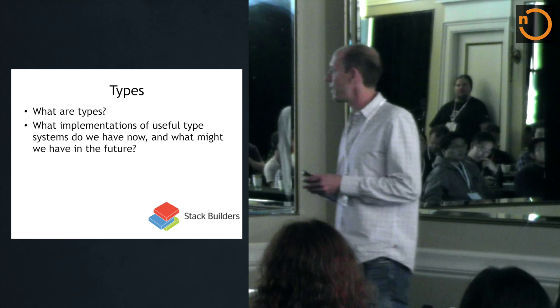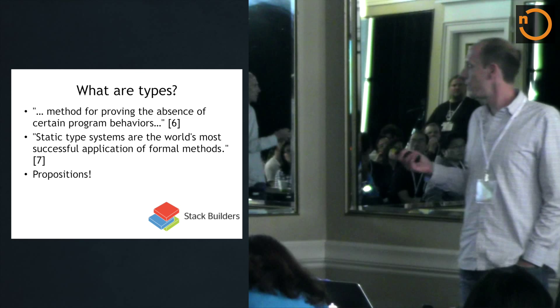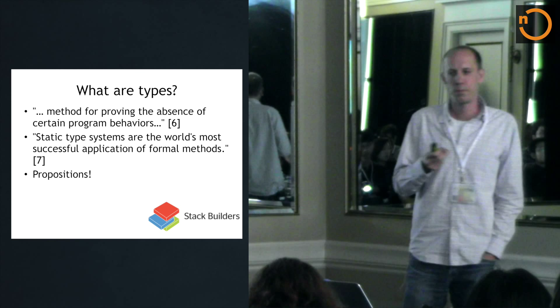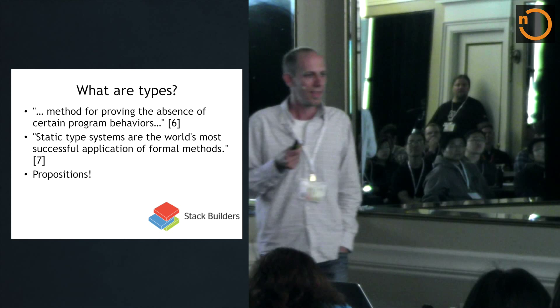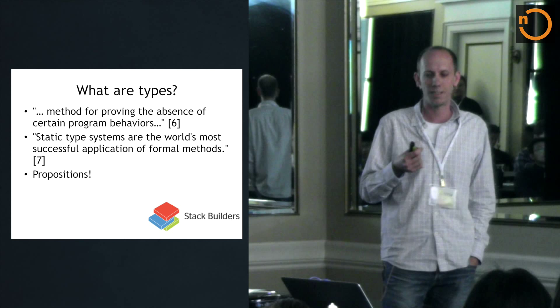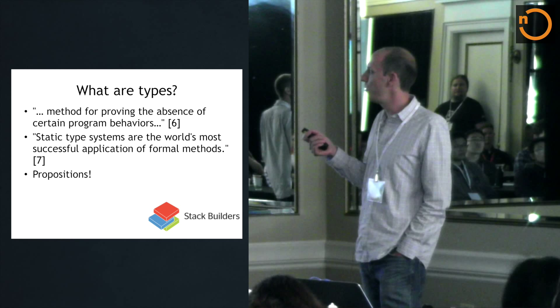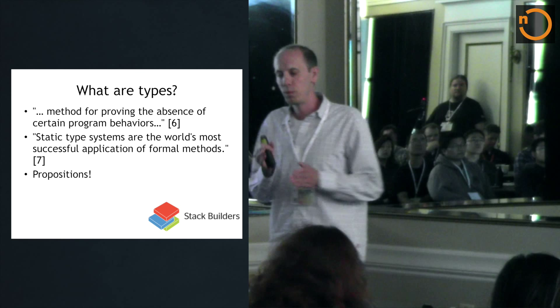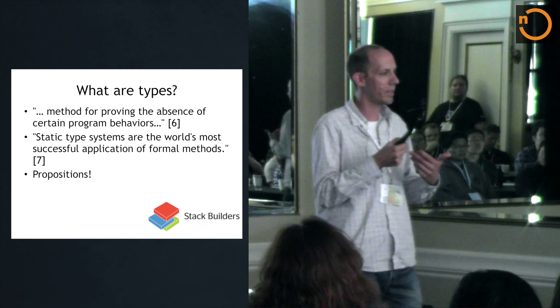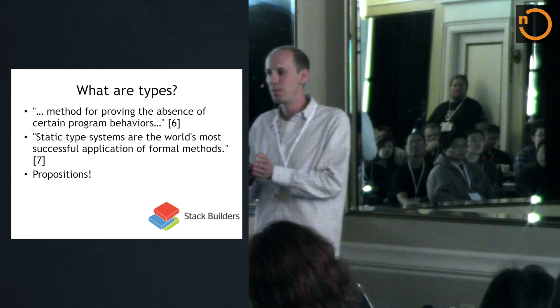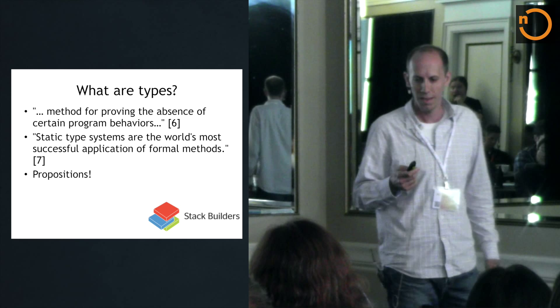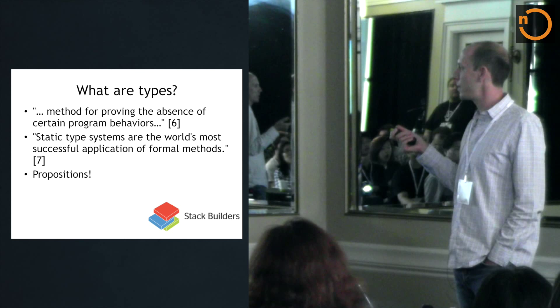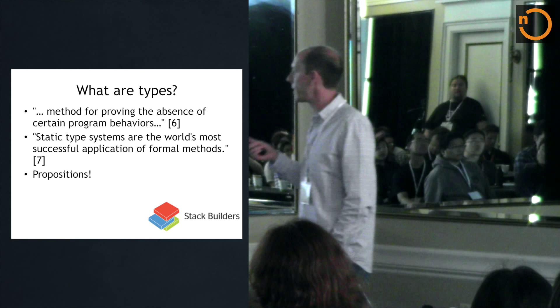So what are types, and what type systems are useful now and what do we want in the future? There's a book called Types in Programming Languages by Benjamin Pierce — for most graduate students in computer science, this is what they use to start studying programming language theory and type theory. Benjamin Pierce says that types are a method for proving the absence of certain program behaviors. The word "proving" is really key here because it really is a proof that those behaviors don't exist. A test is a good way of asserting that given a certain value you get a certain output. But types are slightly different — they can verifiably show that a certain behavior doesn't exist. You can also say that static type systems are the world's most successful application of formal methods.